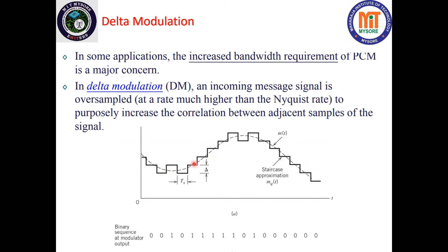After quantization, the encoding is done as follows: as the signal is going in the negative direction, the encoded bit is zero. Here also it is zero because the signal is going down. There is an inconsistency where the signal is fairly constant — one bit is taken as one and another is encoded as zero. Then as the signal is increasing you can observe continuous ones, and when the signal is constant you see alternating one-zero-one. When the signal goes on decreasing, the quantized levels are encoded as zeros.